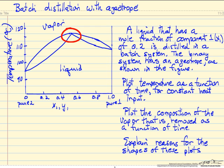What we want to do is plot how does the temperature change as a function of time as we carry out this batch distillation, approximately, assuming we have a constant heat input to the system.